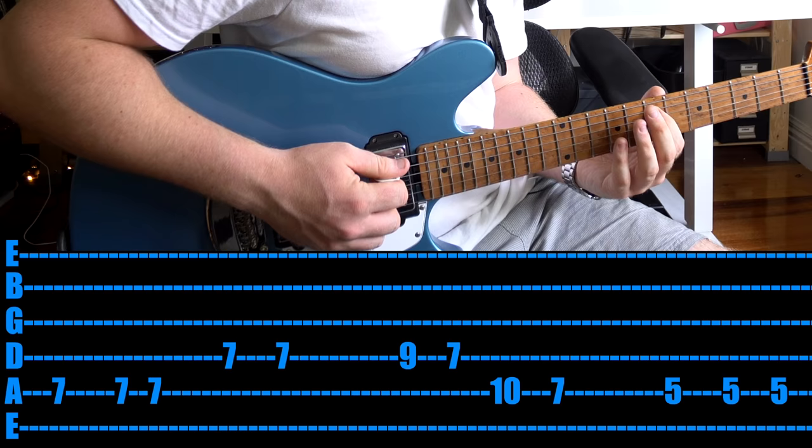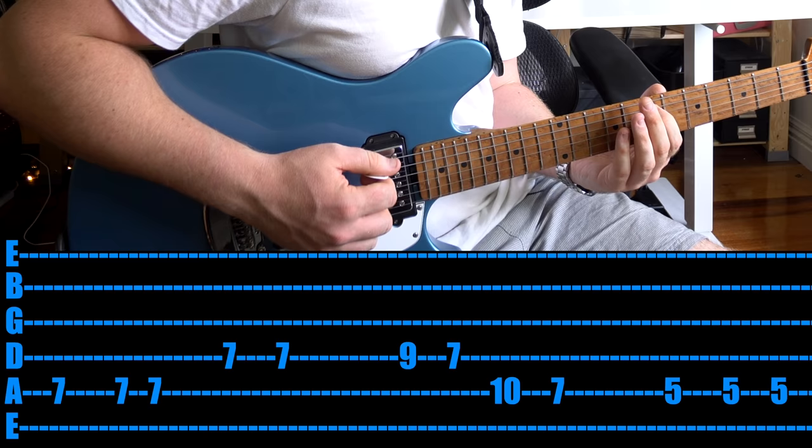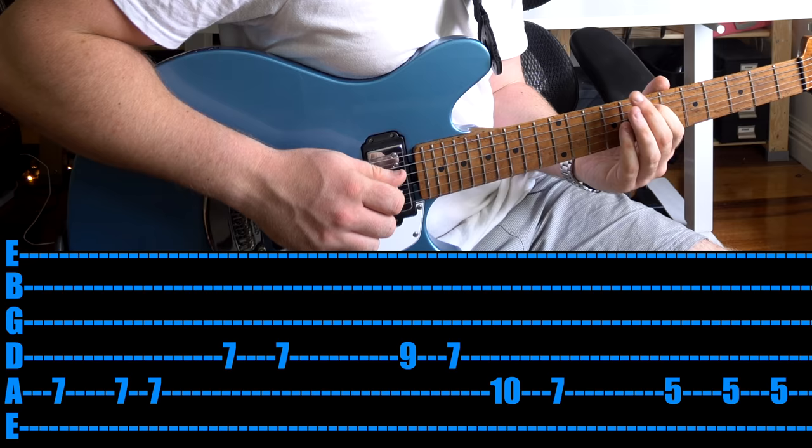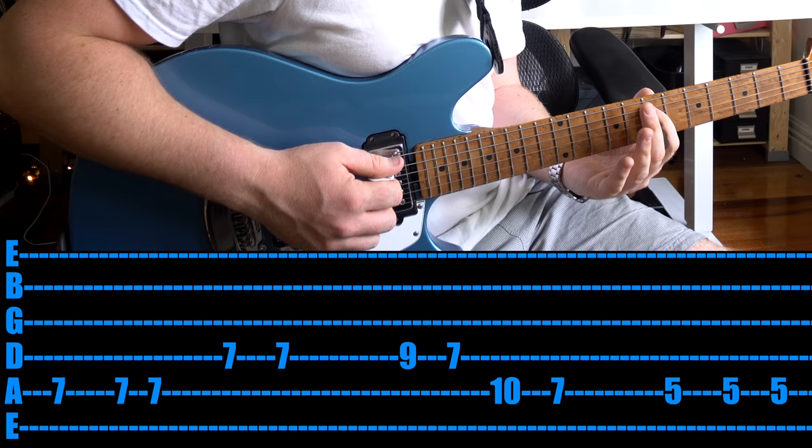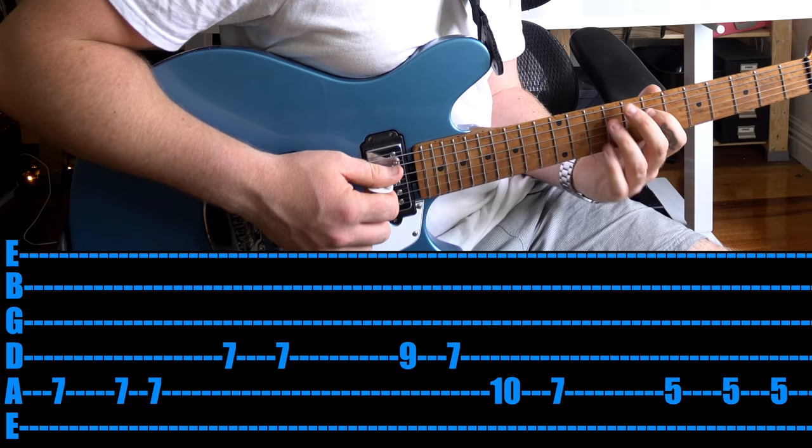Once you've done that play the fifth fret three times, same string, A string. And it just goes in a loop and it would start again. Now it's actually harder to play it with one finger than it is with multiple. So what I would suggest you trying to do is building up to using your third finger on the ninth fret and your pinky on the tenth fret. Just much easier.